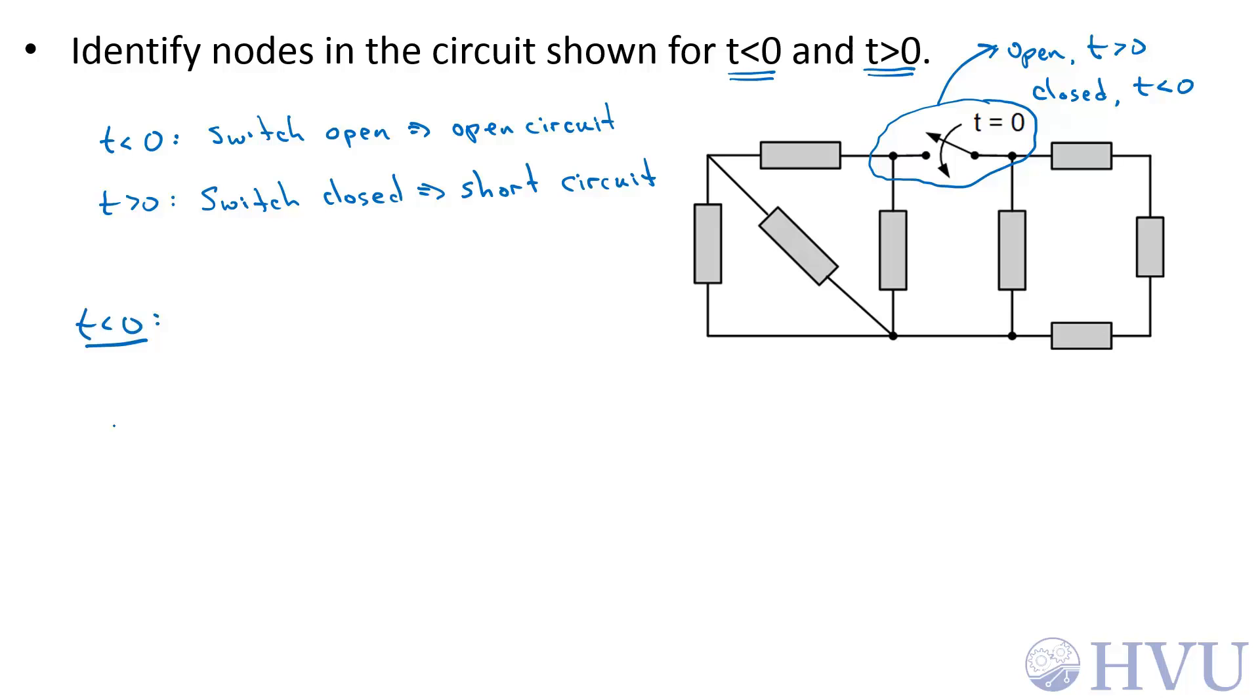For t<0, the circuit looks like this. For this time period, this is an open circuit and I don't know the voltage difference across the switch. That means these two points could be at different voltages, so I have to define them both as nodes.